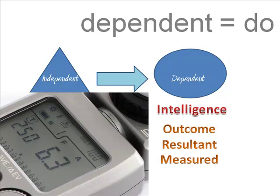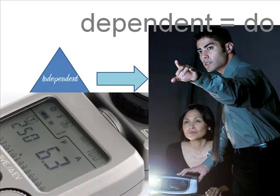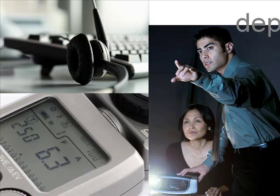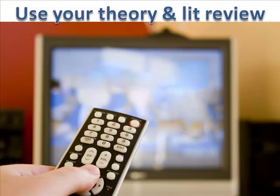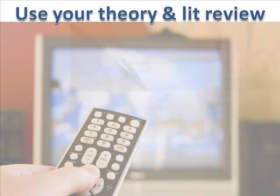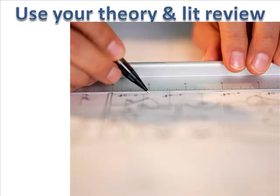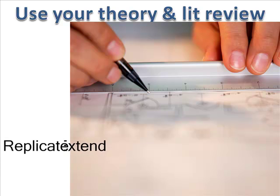In other experiments, manipulating the independent variable can require a lot of equipment. Many experiments present stimuli to subjects — slides, sounds, patterns. Those stimuli must be created, and the equipment used to present the stimuli must be acquired. You use your theory and lit review to decide which equipment is needed and how to set it up. The best way is to find an experiment in your lit review that comes close to what you want to do and use it as a template for your planning.